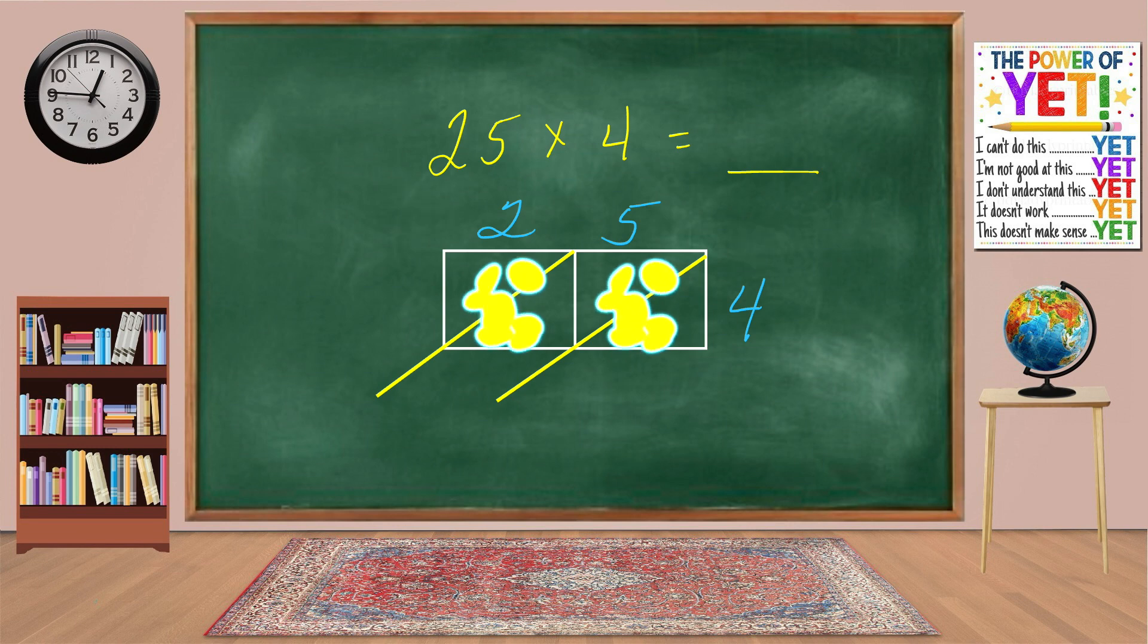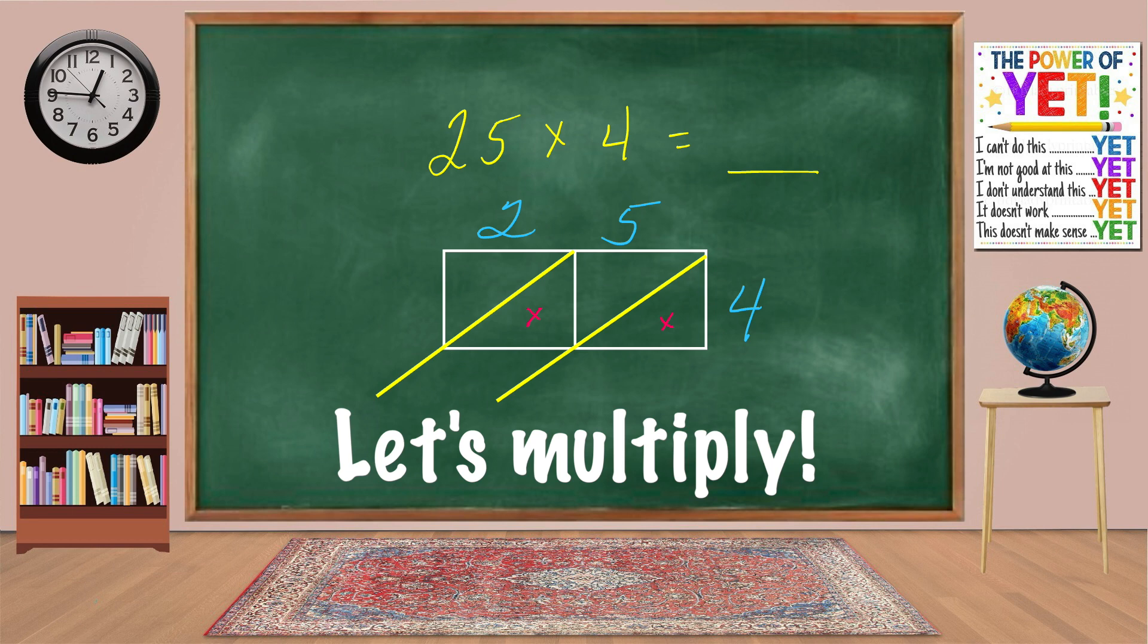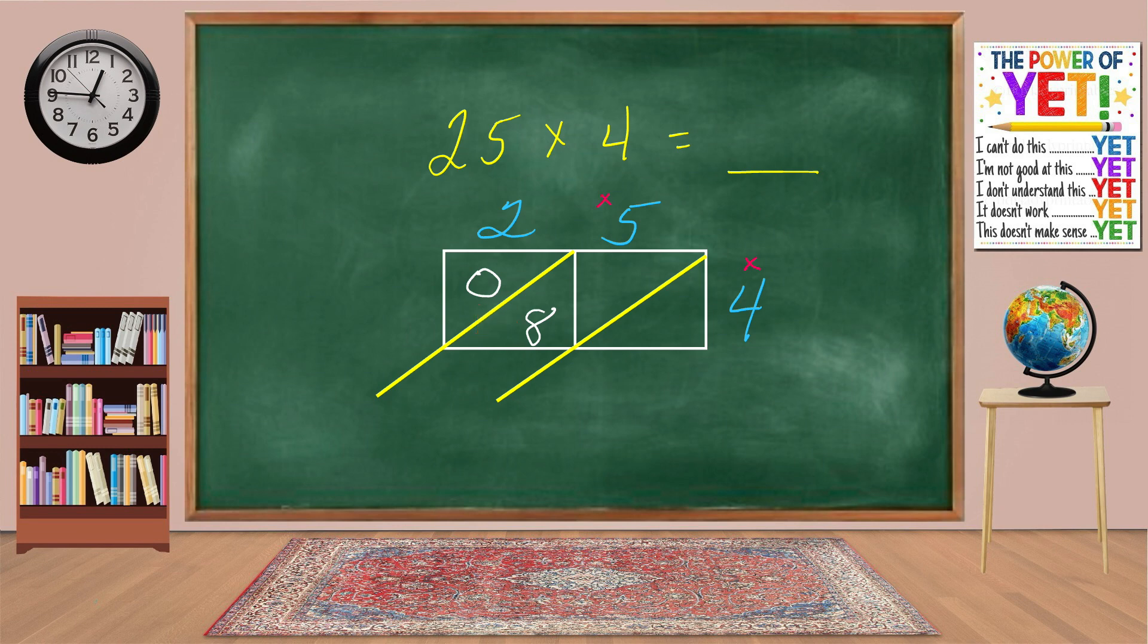Notice that each box has two parts. The upper part is for the tens place when we multiply. The bottom part is for the ones place. Let's multiply. 4 times 2 equals 8. That's 0 tens and 8 ones. 5 times 4 equals 20. That's 2 tens and 0 ones.